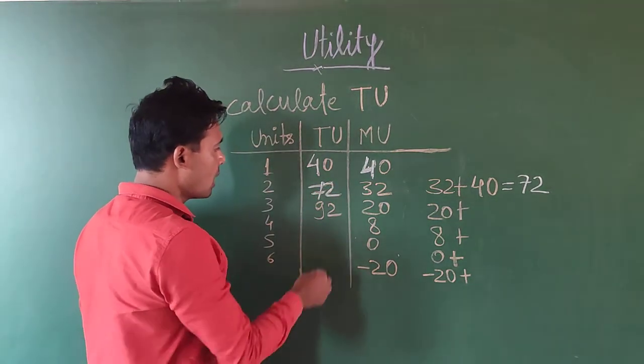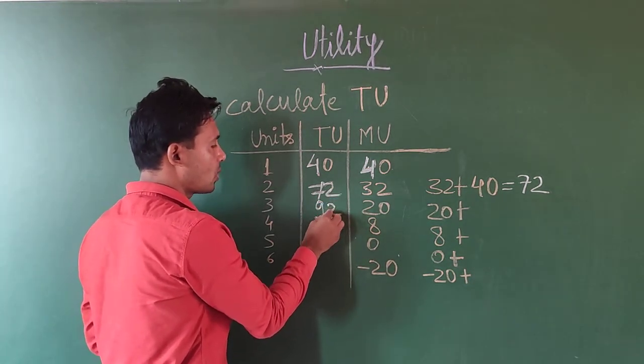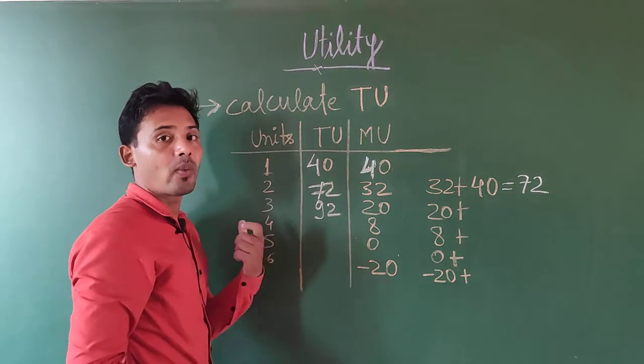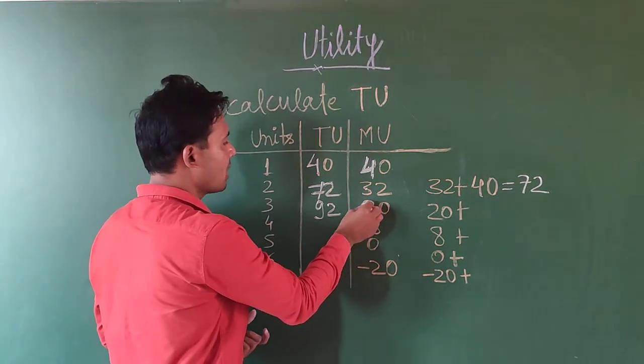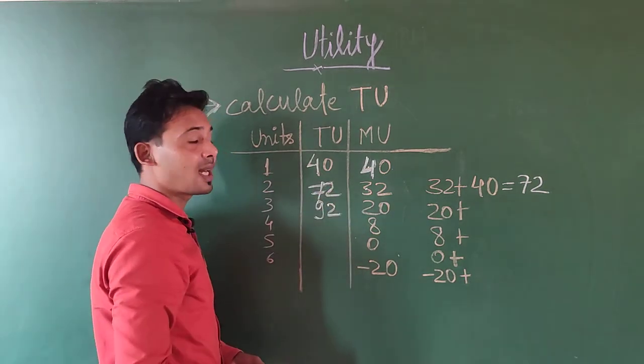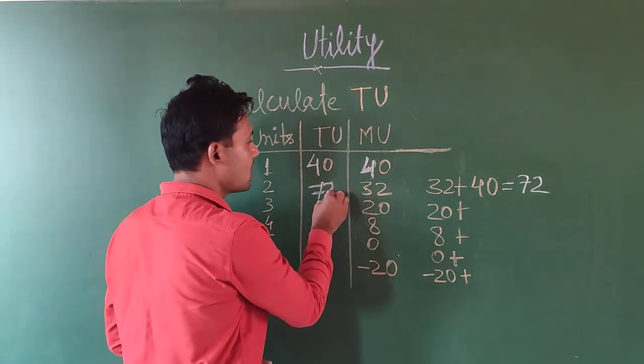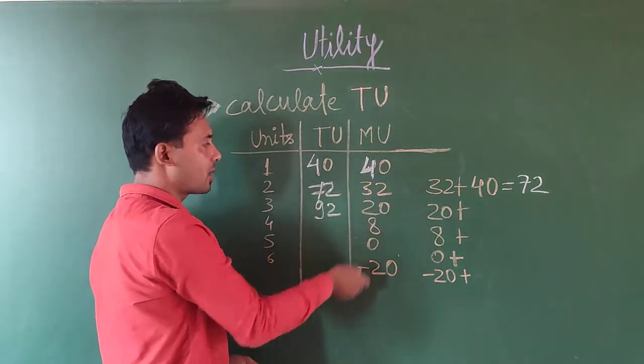Next one, 92. We have 92 as total utility. Where did this come from? This is simply 72, plus what should be added? Marginal utility is given.